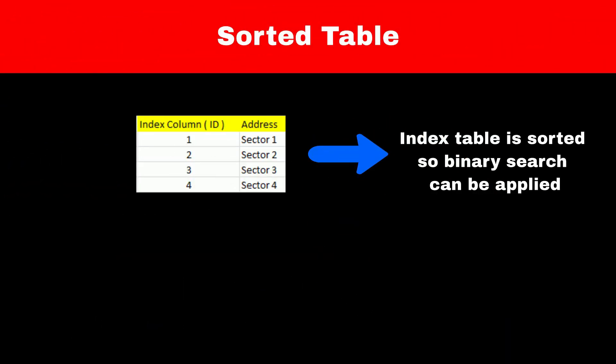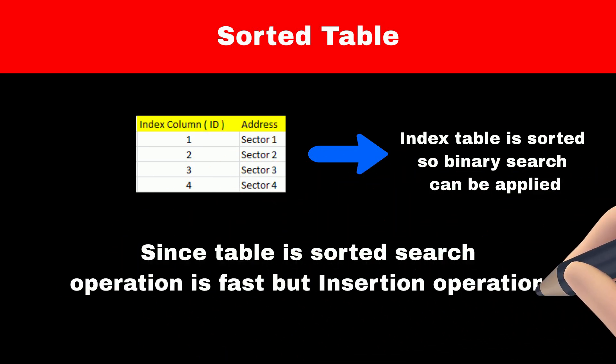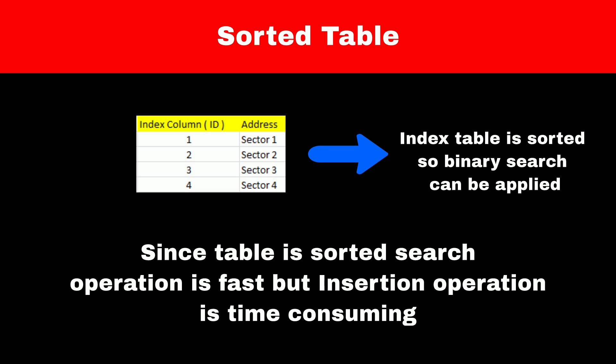Another reason is that the index table is sorted by default, so we can apply binary search for query searching. However, since the table is sorted, insertion of a new row becomes a time-consuming operation. We cannot simply add the record at the end of the table — we have to find the accurate location based on sorting and then add it. If you create multiple index tables, you have to insert the new row in all of them, which is a time-consuming process. So indexes come with a trade-off.